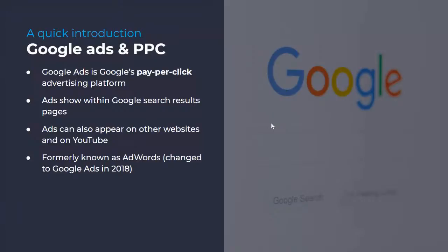It's formerly known as AdWords, which rebranded to Google Ads in 2018. So it's still fairly common — you might still hear it being referred to as AdWords. So I'll just quickly run through some of the main types of ads on Google so we're all clear on what we're talking about when we talk about paid ads on Google.